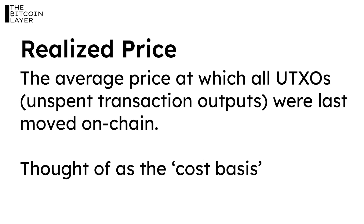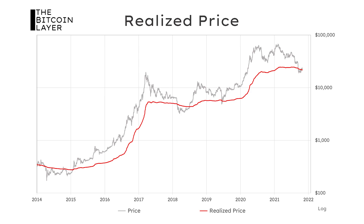Number two: realized price. This is another way of saying the cost basis of Bitcoin. We take the average price of all the transactions that move on-chain — mostly when investors send Bitcoin to exchanges to sell, or withdraw Bitcoin from exchanges after purchasing. We look at realized price because it has historically served as a very important floor for Bitcoin's price. Generally, when Bitcoin's price comes back down to its realized price, investors are reluctant to sell, as that is their cost basis.